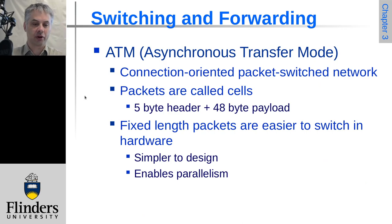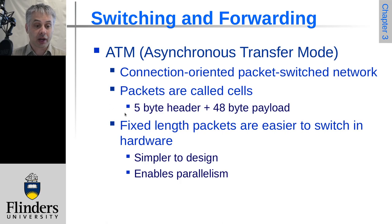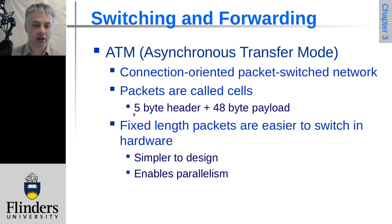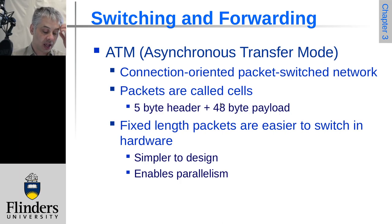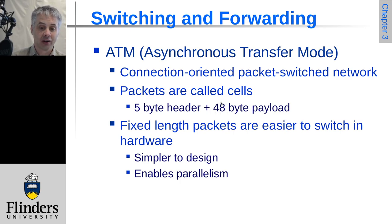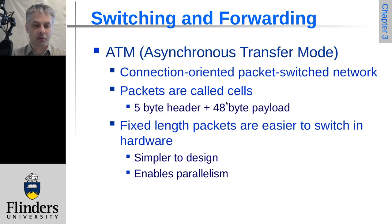Looking at Asynchronous Transfer Mode in a bit more detail: it's a connection-oriented packet-switched network. They call the packets 'cells.' Notice how short they are compared to Ethernet, which can have one-and-a-half kilobytes. In ATM we have a 5-byte header and a 48-byte payload. An IPv4 source and destination address would take up 8 of those 48 bytes; with IPv6, just the addresses would consume 32 of those 48 bytes. So this is really not suited to end-to-end datagram routing.